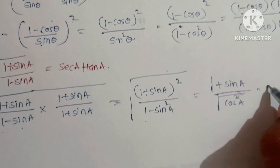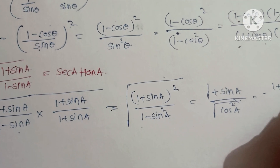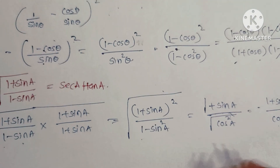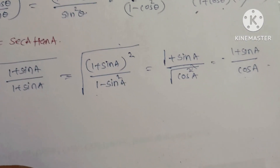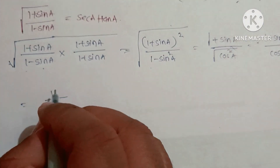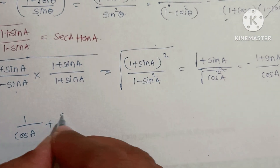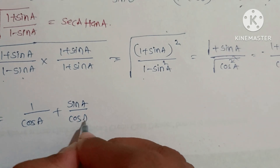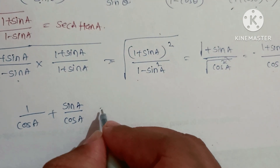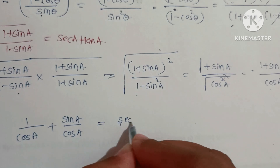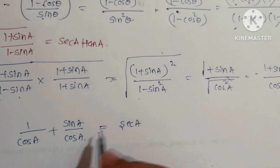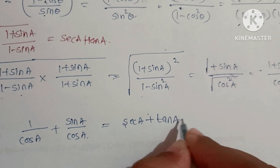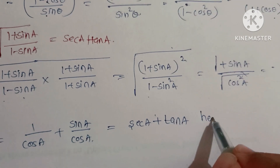Split (1 + sinA)/cosA into 1/cosA + sinA/cosA = secA + tanA. Hence proved.